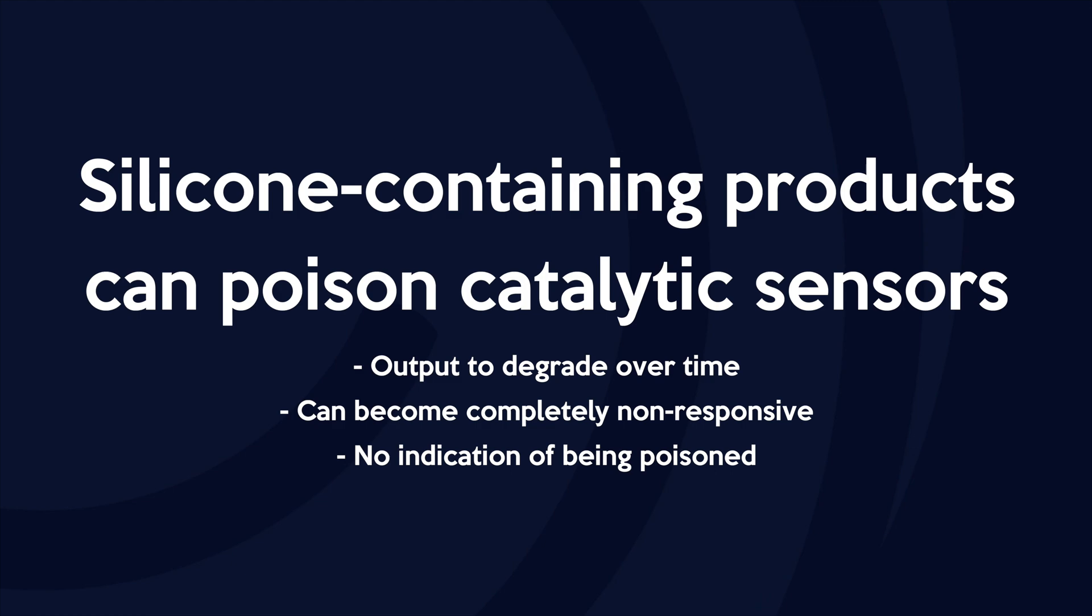The pellistor in this test is a poison resistant variant. These typically incorporate a filter to prevent poisons from reaching the sensing element. The MPS is inherently immune to poisons and doesn't use any such filters.